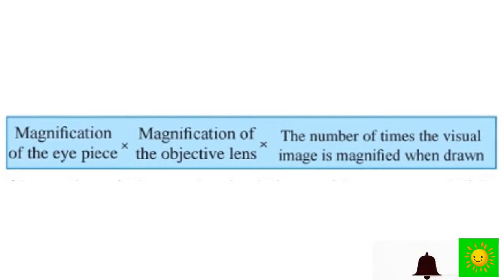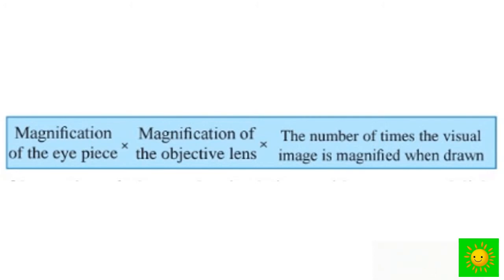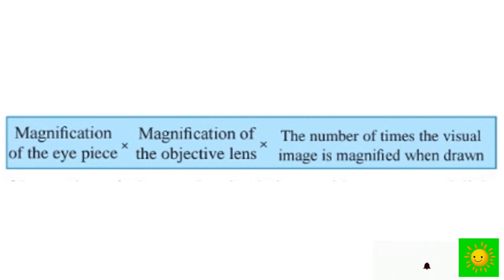The magnification should be stated in the following way when linear diagrams are drawn upon observing the specimen. When we are drawing the linear diagram, this formula should be used: magnification of eyepiece, multiplied by magnification of objective lens, multiplied by the number of times the visual image is magnified when drawing.